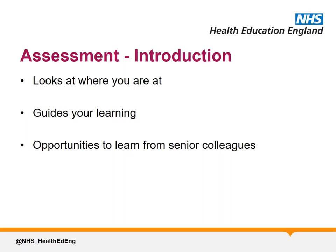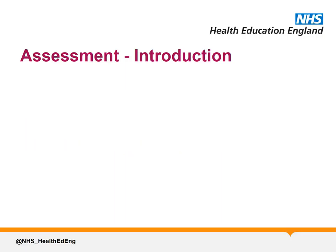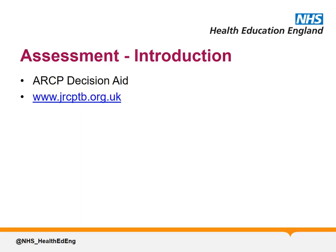At the end of every year of training, trainees have an ARCP, or Annual Review of Competence Progression, which you need to pass. The requirements for passing this are defined in what is known as the ARCP Decision Aid. This is created nationally by the Joint Royal Colleges of Physicians Training Board, or JRCPTB, and can be downloaded from their website, www.jrcptb.org.uk.